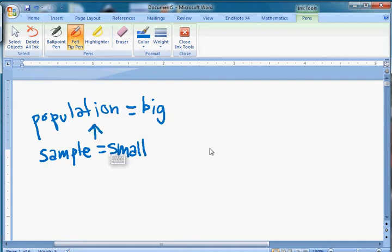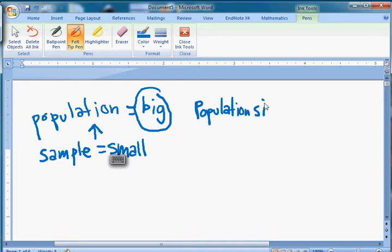One thing we might want to know about the population is its size. When I say big, how big? The population size is given by the big letter N. And so that's the first statistic that we use. Population size is big N, and the sample size, well, because samples are small, instead of a big N we're going to use a little n.